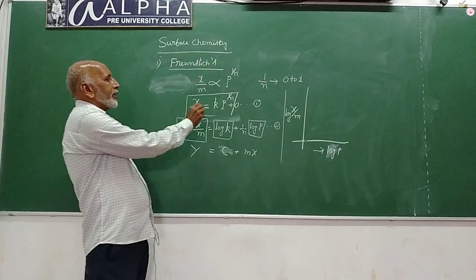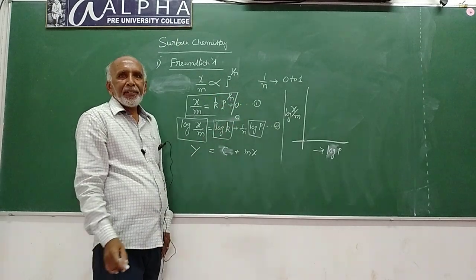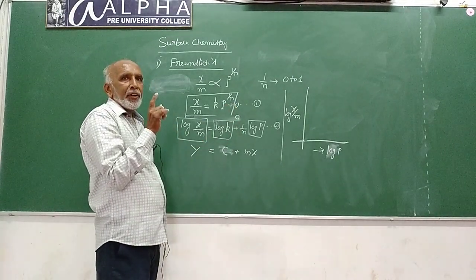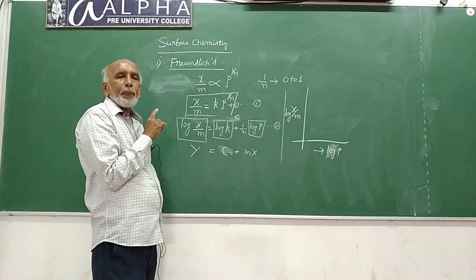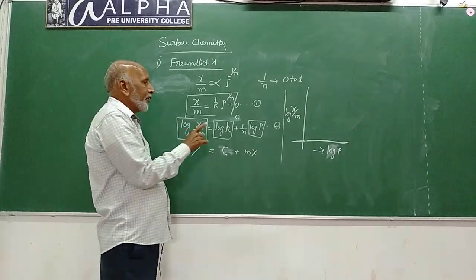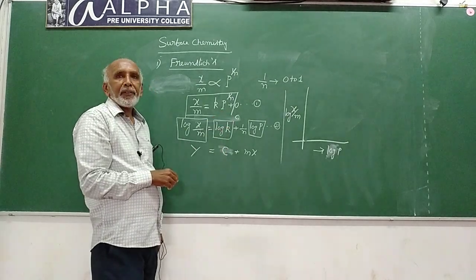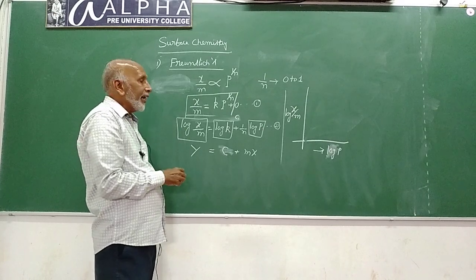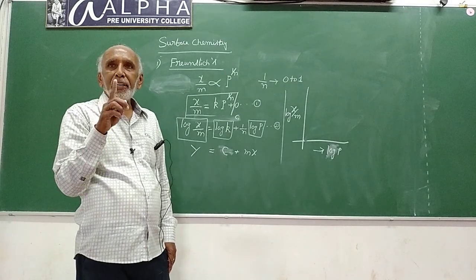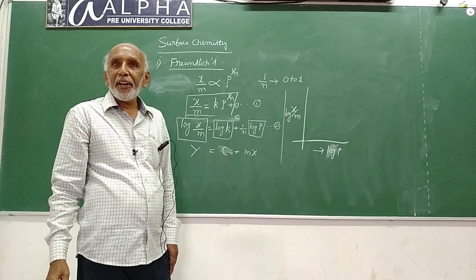One important distinction: in the previous case the constant c was zero, so the straight line passed through the origin. Here, c has a definite value, that is log k. This indicates the plot of log(x/m) against log p is a straight line, but not passing through the origin.